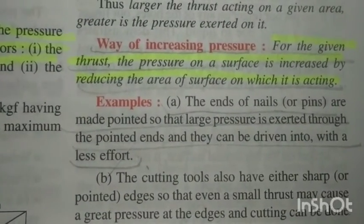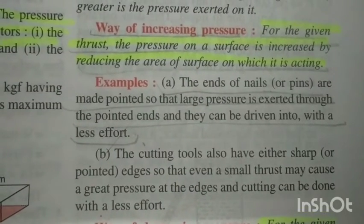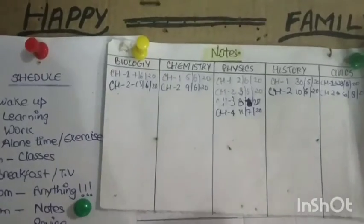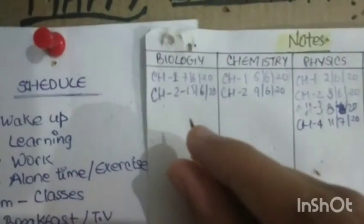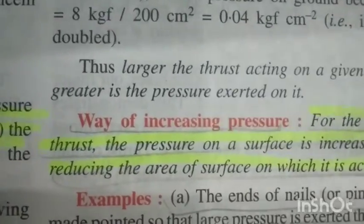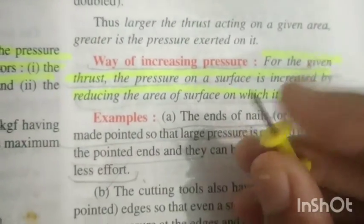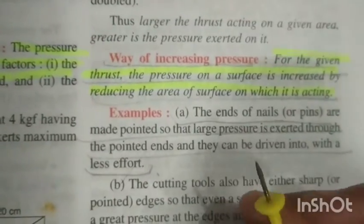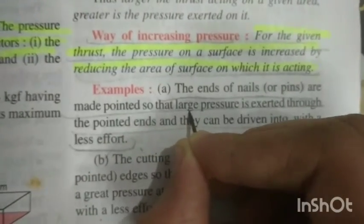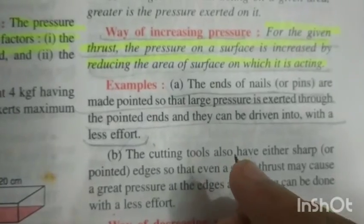For increasing pressure, the area should be less. I have a soft board pin — as you can see, the area of its tip is very small. Now I'm going to try to pass it through. It went easily — why? Because the area was small and the pressure exerted was great. Small area but high pressure. Nails are pointed at the ends so they can be driven in with very little effort.